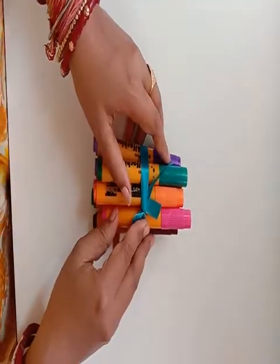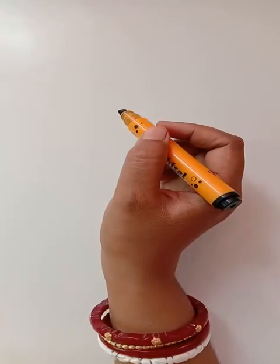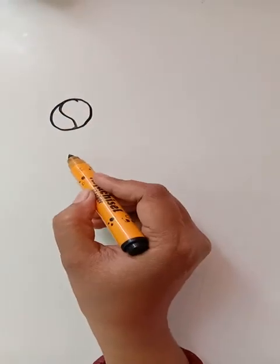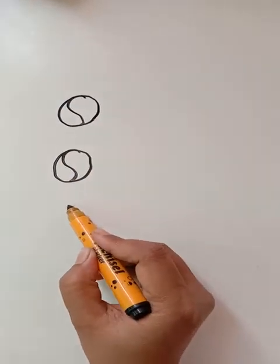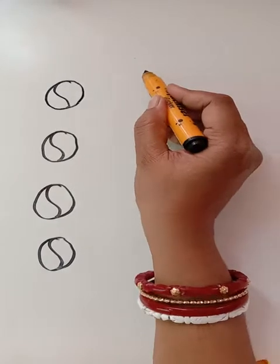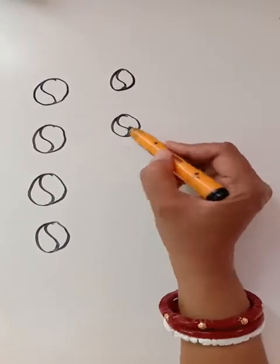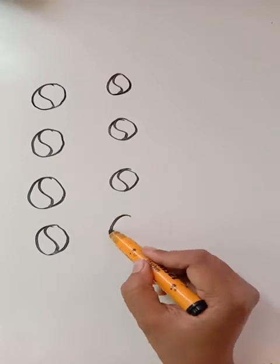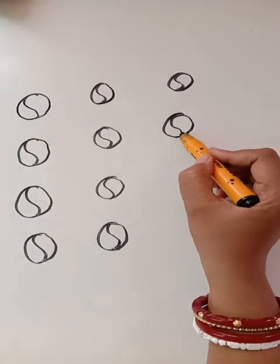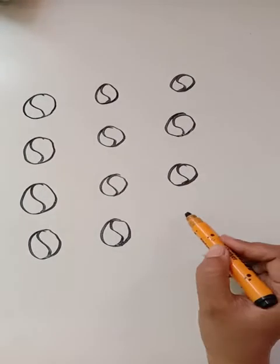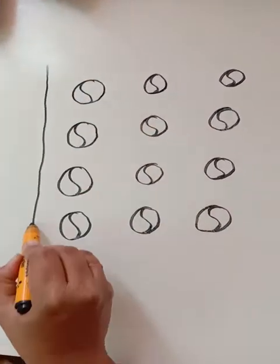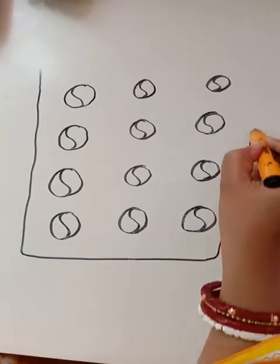Let's make one more bundle. Let's draw a few balls and write the numbers. 1, 2, 3, 4, 5, 6, 7, 8, 9, 10. Now we have a box full of balls.